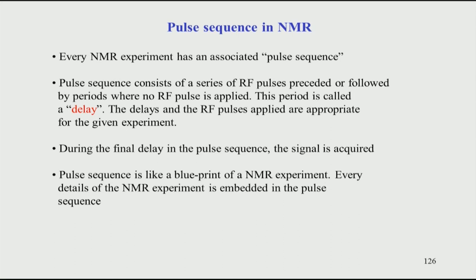You have a pulse, delay, pulse, delay, and so on. After the last pulse is over — after the final delay in the pulse program — you start recording the signal, which is called FID. The FID recorded from the sample comes after the last pulse in the sequence. The pulse sequence is therefore like a blueprint: just as a contractor needs a blueprint to construct a building, the pulse sequence tells the NMR expert how the experiment is to be performed.